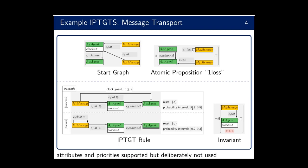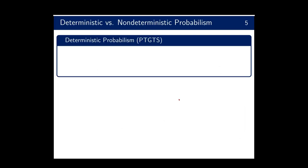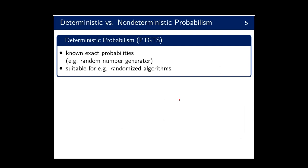Now I want to discuss why probability intervals are used. We distinguish between deterministic and non-deterministic probabilism. Deterministic probabilism, as used in probabilistic graph transformation systems and probabilistic timed automata, makes sense when we know exact probabilities — for example, when probabilistic values are derived from a random number generator, as is important for randomized algorithms that make local decisions.